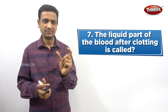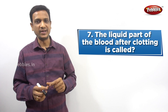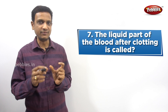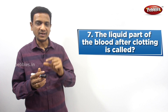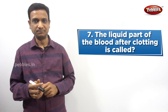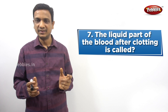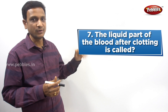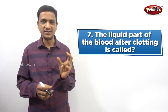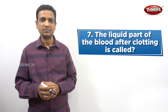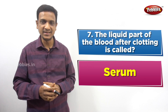Blood has two parts: a cellular part and a liquid part. The liquid part of blood is generally called plasma. Plasma is the name of the liquid part of blood without clotting. But once the blood gets clotted, the liquid part that gets separated has another name - it is called serum.